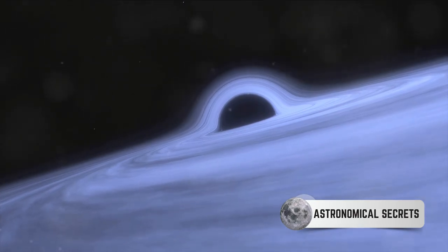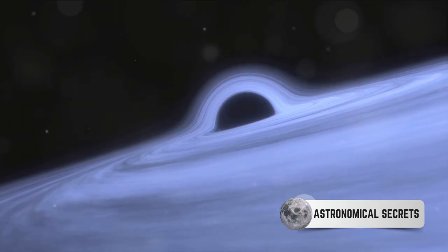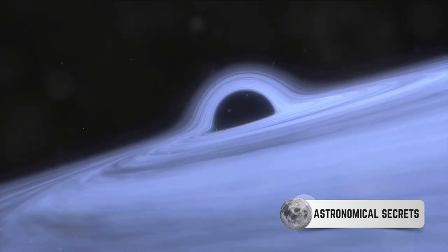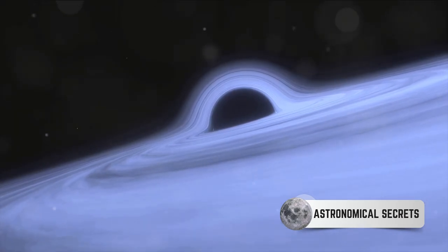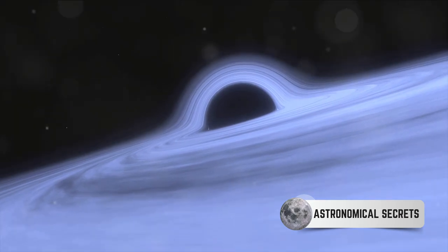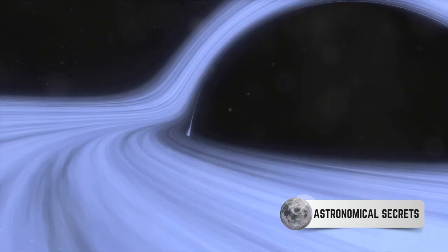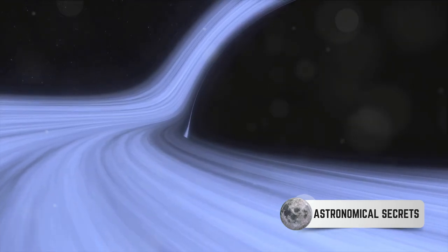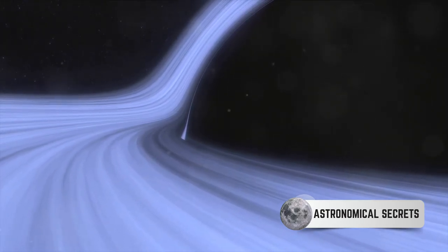Accretion disks are essentially flat rotating structures of dust, gas, and plasma. They're spread around objects like black holes, providing them with their daily dose of cosmic nourishment. As the matter in the disk spirals closer and closer to the black hole, it speeds up and heats up, eventually getting eaten by the black hole.